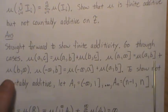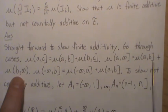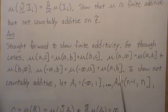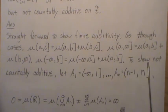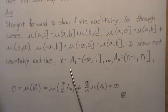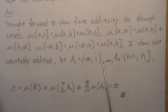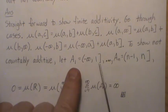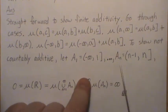You go through cases where it's from A to infinity, and show that it's equal to the sum of the two disjoint sets in the same way here. Now, to show that it's not countably additive, let's let the sets A₁ be minus infinity to 1, and then Aₙ is N-1 to N.